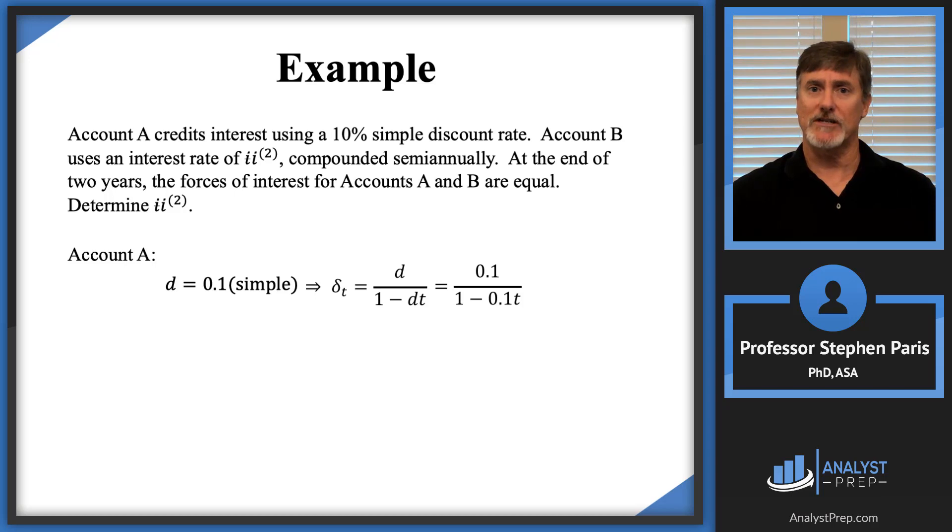Now what I need is the force of interest at time 2 because the second to last sentence says at the end of two years, that's at time 2, the forces of interest are going to be the same. So I'll plug in a 2 for T. And what I'll get is that the force of interest in account A at time 2 is 0.125.